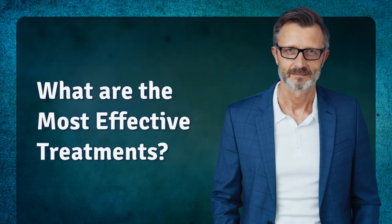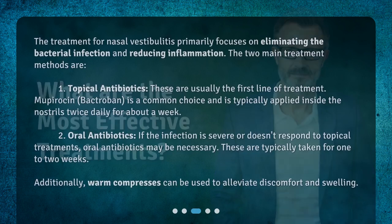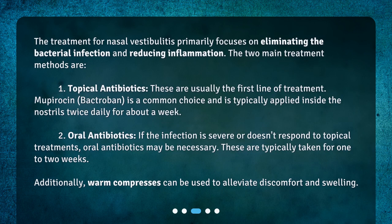What are the most effective treatments? The treatment for nasal vestibulitis primarily focuses on eliminating the bacterial infection and reducing inflammation. The two main treatment methods are: one, topical antibiotics — these are usually the first line of treatment. Mupirocin (Bactroban) is a common choice and is typically applied inside the nostrils twice daily for about a week.